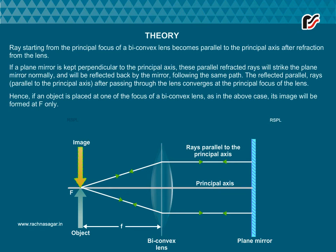Hence, if an object is placed at the focus of a biconvex lens, as in the above case, its image will be formed at F. The distance between the optical center of the lens O and its focus F is the focal length f of the lens.